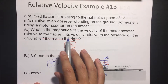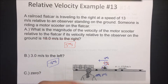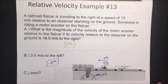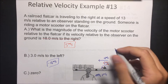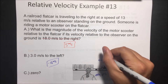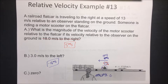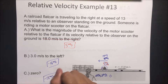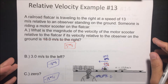What would it look like to the flat car if the velocity relative to the observer on the ground is 0? That means it's cancelling out with how fast the railroad is going. So it's going to look like it's staying in the same position — it has to be going 13 meters per second to the left, negative 13 meters per second. These are a little bit confusing, but just try to think about it and that's going to be the key to solving these problems.